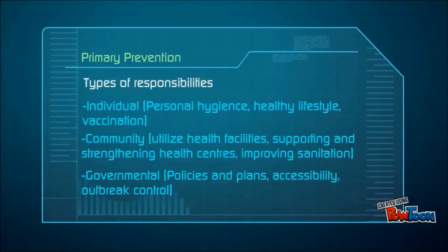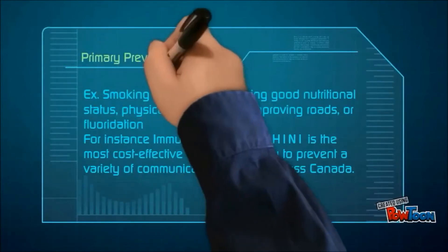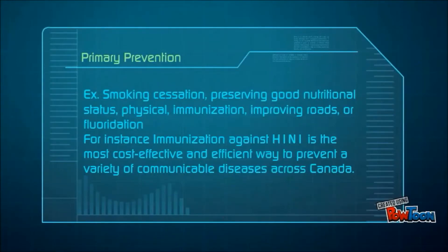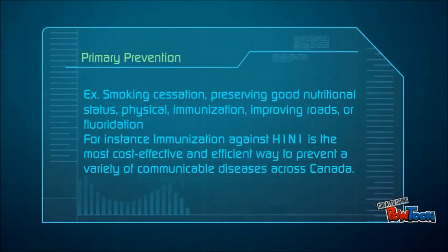Examples of primary prevention include smoking cessation, preserving good nutritional and physical status, immunization, improving roads, and fluoridization of the water supply.